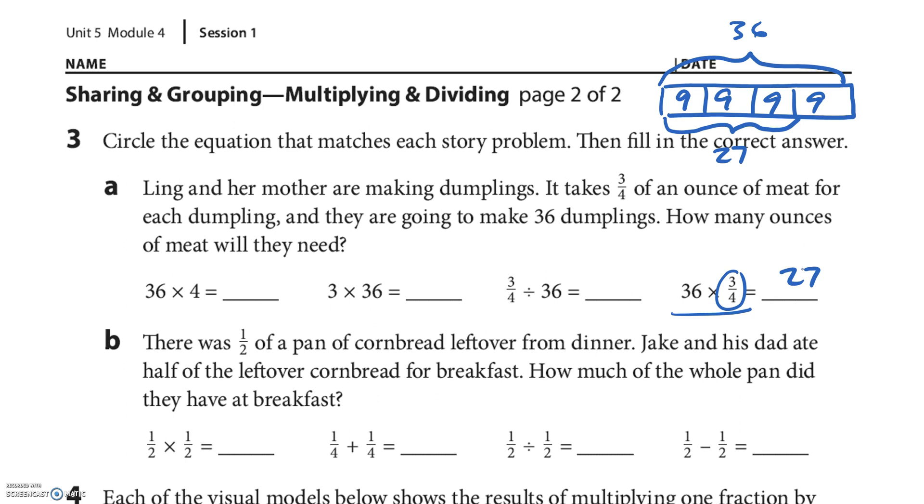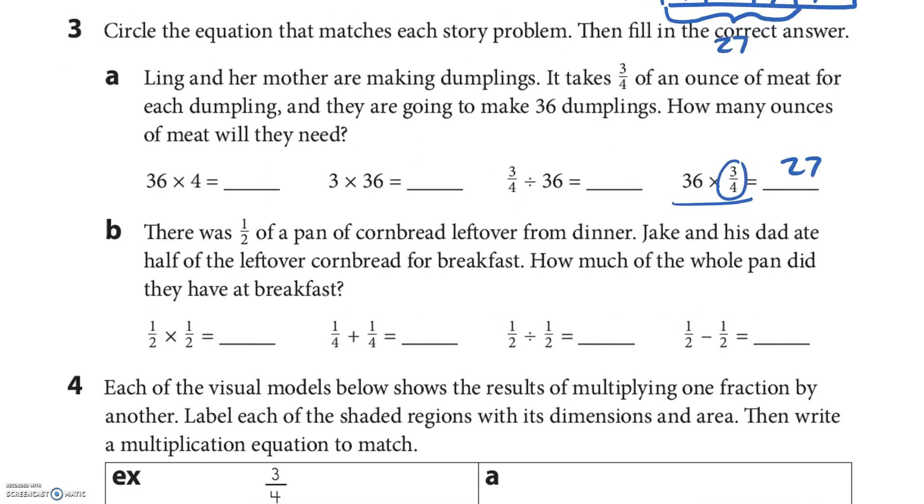Part B: There was one half a pan of cornbread left over from dinner. Jake and his dad, two people, ate half of the leftover cornbread for breakfast. How much of the whole pan did they have for breakfast? There was a half left and they had half of a half, so one half times one half. Half of a half is one fourth.